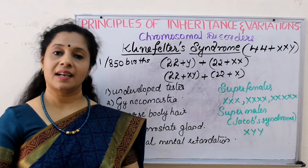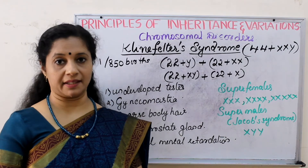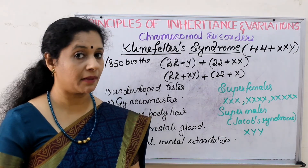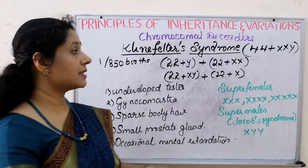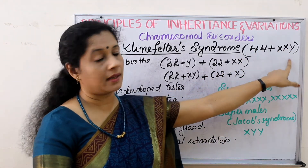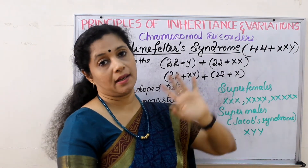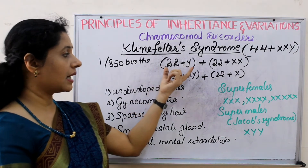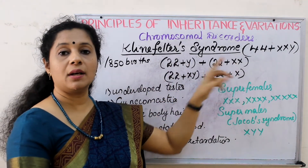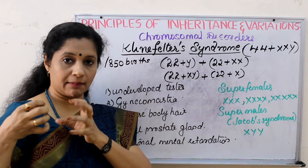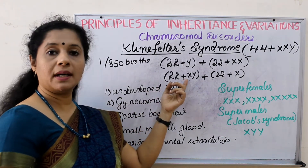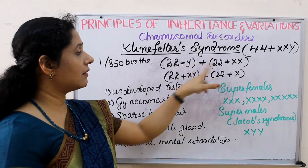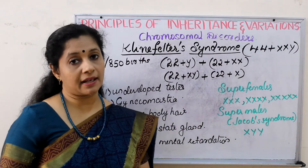Next is Klinefelter syndrome, also a sex chromosomal abnormality. Here the individual is considered male because he has got one Y chromosome, but his abnormality is that he has one extra X chromosome. A normal male should be 44 plus XY, but these people are 44 plus XXY. The occurrence chance is 1 in 850 births. It can be due to fusion of two different types of gametes: first, an androsperm with 22 plus Y fusing with an egg carrying 2 X chromosomes due to non-disjunction; or a sperm with both X and Y and a normal ovum. In both cases, the child will receive 2 X and 1 Y.